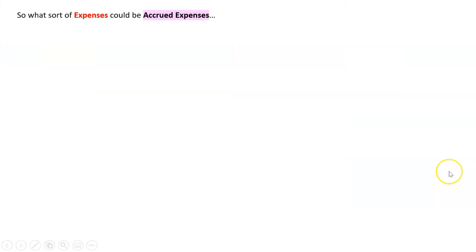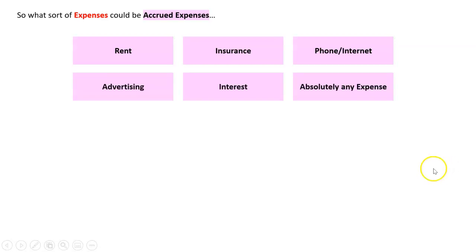So what sort of expenses could be accrued expenses? We'll see some common ones that we'll get probably a lot through our textbook and the exam, which are rent, insurance, phone, internet, advertising, and interest. We better deal with that one. That's a really tough one. But the point is, basically, any expense can be accrued. Any expense a business could have that it normally pays could be accrued. That just means that they would incur it first and pay for it later.